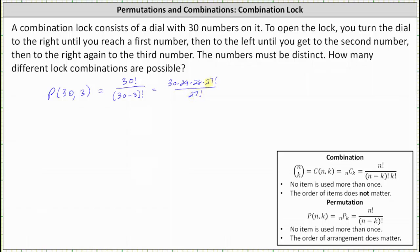Simplifying, 27 factorial divided by itself simplifies to 1, leaving us with 30 times 29 times 28, which is equal to 24,360.